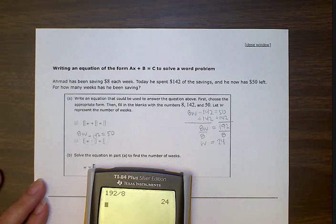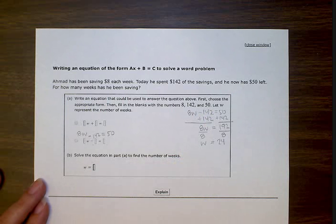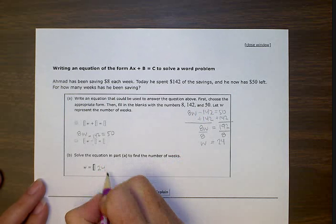Wow, that is so long. It's like 6 months he was saving up his money. Man, he must have wanted something pretty bad. So that's going to be our answer right here. W equals 24.